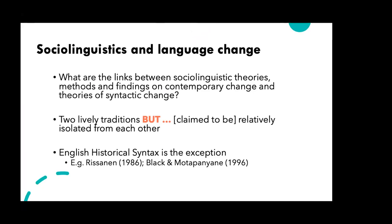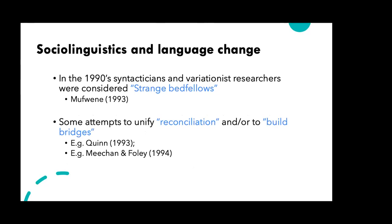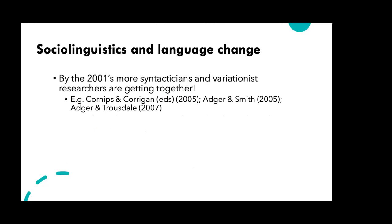The aim of this workshop is to explore links between sociolinguistics and syntax. Let's consider a bit of backstory on the rapprochement between the two fields. There are definitely two lively traditions, but for the most part they operate relatively isolated from each other. In the 1990s, syntacticians and variationist researchers were considered strange bedfellows. Some attempts to unify them came through Quinn's work on reconciliation and Meechan and Foley in 1994 in their paper entitled 'Building Bridges.' By the 2000s, more syntacticians and variationist researchers were getting together — for example, the volume by Cornets and Corrigan in 2005, and David Adger and Jennifer Smith got together in 2005 and did quite a bit of work together, as did Adger and Truesdell a little bit later.